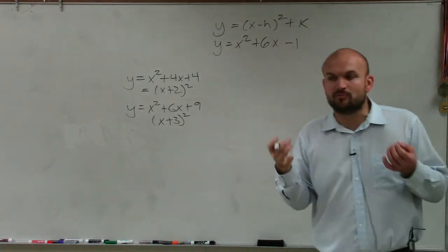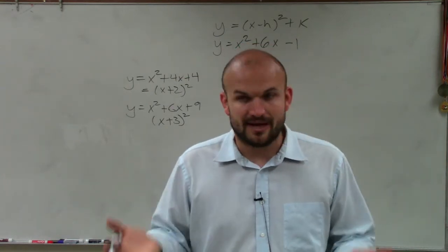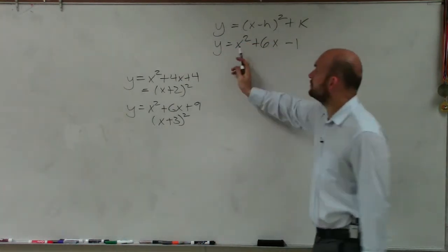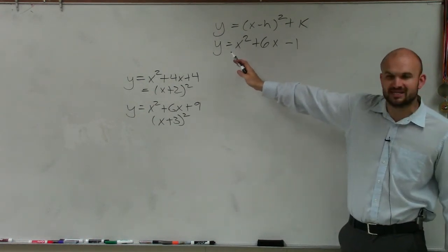So what we do, the process of completing the square is creating a perfect square. So to do that, there's a couple steps. The first step is to make sure your a is 1, which in this case we're good. So that's why this was the easy one.